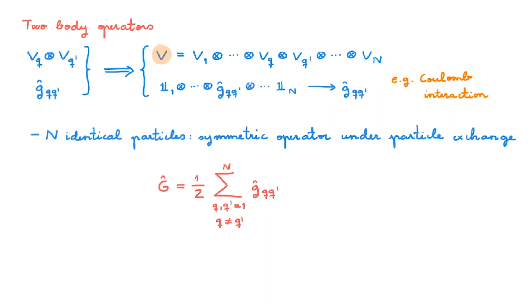This sum runs over all q, q' pairs from 1 to n so that the action of this operator doesn't change when we exchange any two particles. We insist that q is different from q' because a term where they are equal is in reality a term acting on a single particle, already covered in the video on one-body operators. The factor of one-half doesn't change the physics of particle exchange, but we choose it because it leads to more convenient mathematical expressions. An operator like capital G acts on all n particles, but is made of individual operators that only act on two particles at a time — this is typically called a two-body operator.